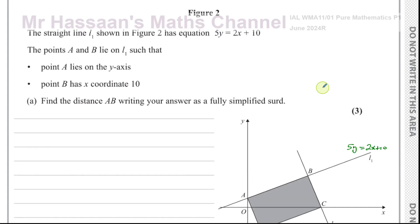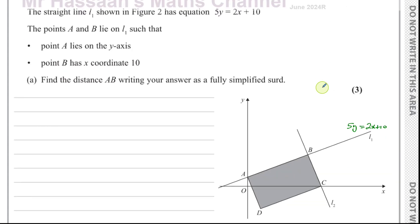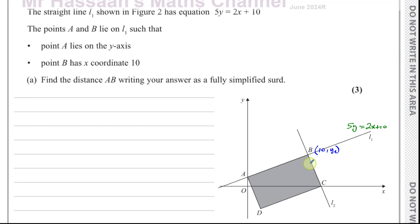There's a straight line L1 shown on figure 2, which has equation 5y equals 2x plus 10. The points A and B lie on line 1, such that point A lies on the y-axis, and point B has x-coordinate 10. We need to find the distance AB, writing the answer as a simplified surd.